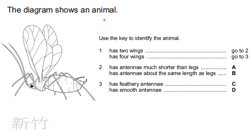The diagram shows another animal — use the key to identify it. Looking at the wings: the question mentions two wings or four wings. On this side you can see two wings, and on the other side also two wings, so we say four wings. The question goes to number three. In question three: check the antennae — is it smooth or feathery? This is a smooth antennae, so the answer is going to be D.